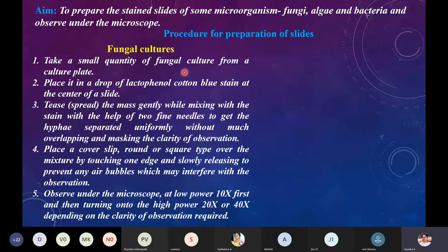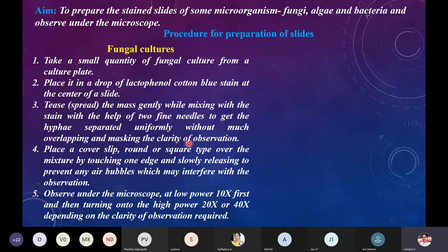Once you have transferred the fungal culture onto the dye, you have to tease — that is, spread the mass gently while mixing it with the stain using two fine needles, to get the hyphae separated uniformly without much overlapping and masking the clarity of observation. For bacterial cultures we heat-fix the microorganism, whereas for fungal culture that step is not required. Just drop the fungal culture into the stain, spread it evenly, and place a cover slip.